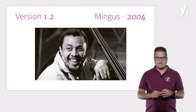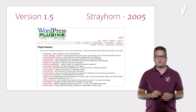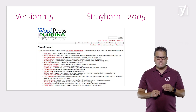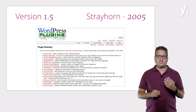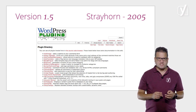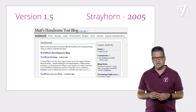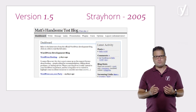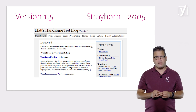It took another year and a few updates for the plugin repository to be created in version 1.5. This version also brought an improved and extended theme system and it introduced the dashboard. Still, the look of WordPress was quite far from what we know today.